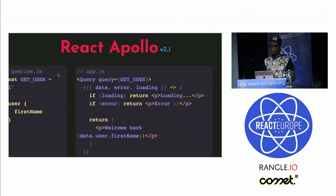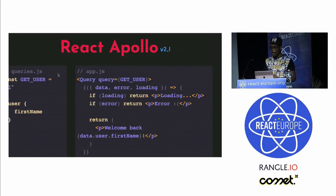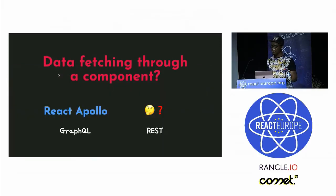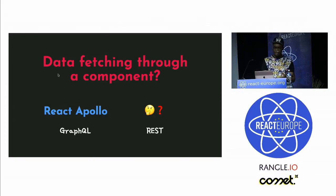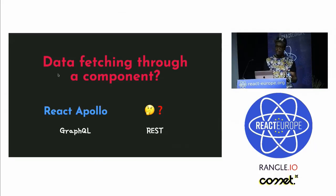I took Apollo as an example, but the same thing applies with the query renderer from Relay. I really like the idea of ditching functions in favor of using a simple component. But there's a trap: if React Apollo and Apollo Client are meant to be used with a GraphQL API, how are you supposed to use this kind of component with loading and error states with a REST API?